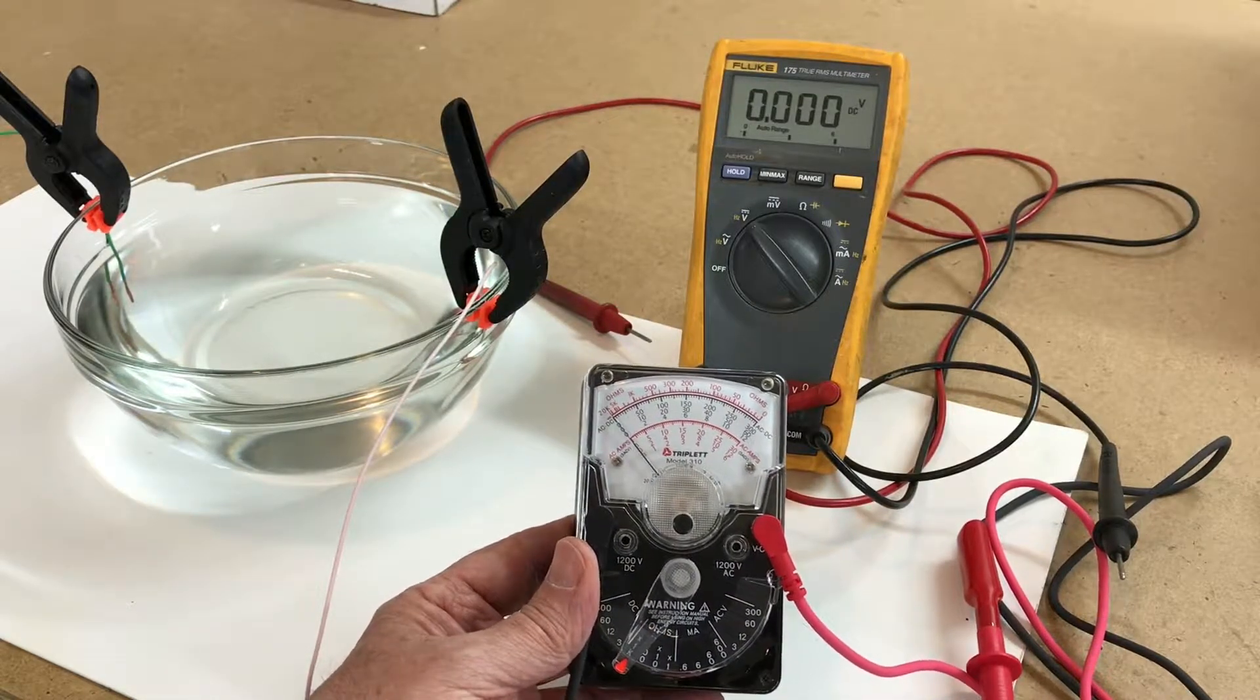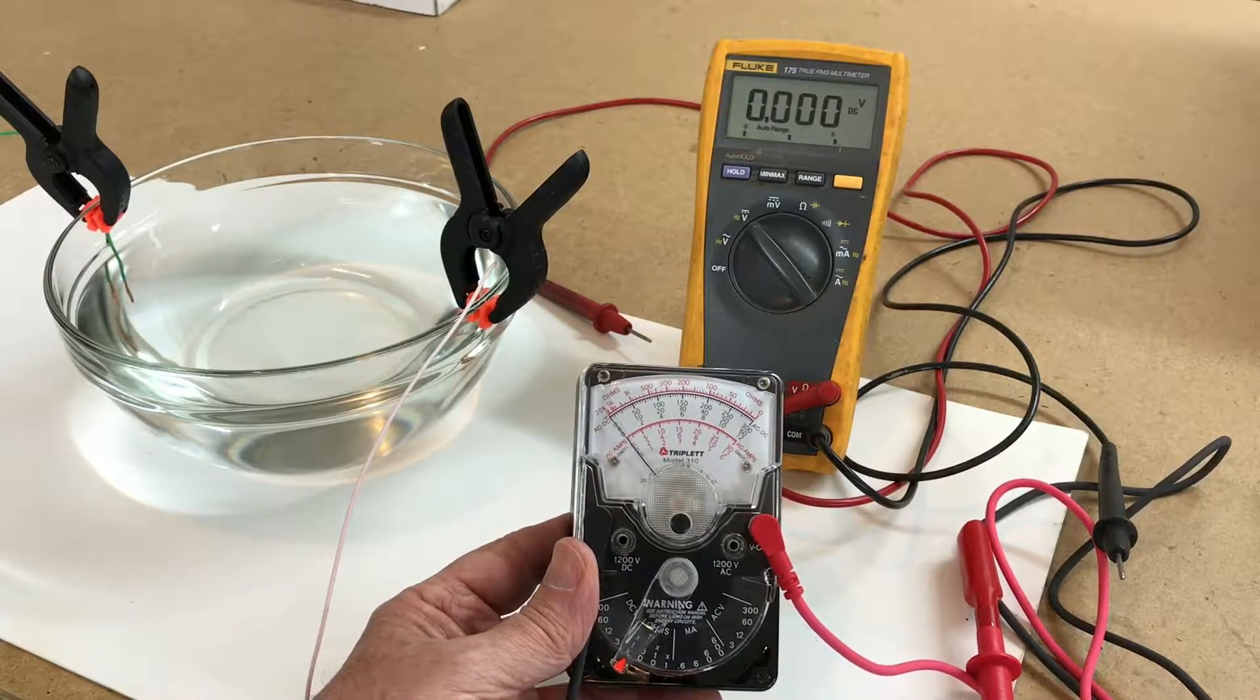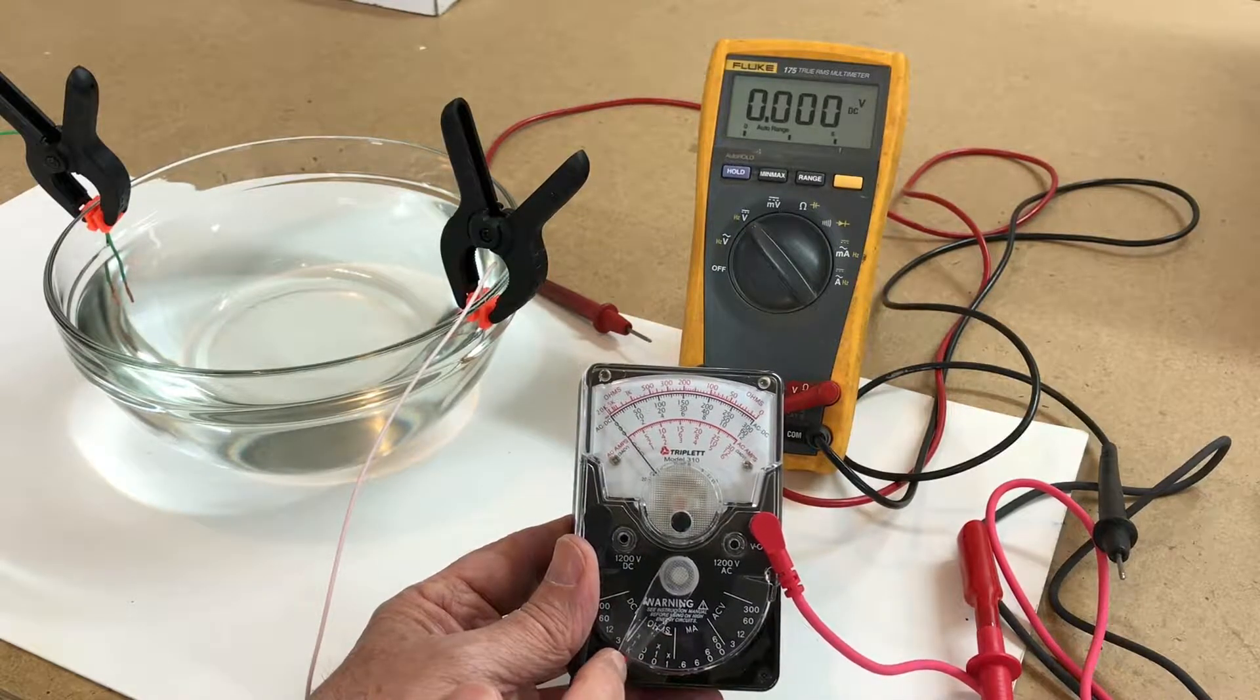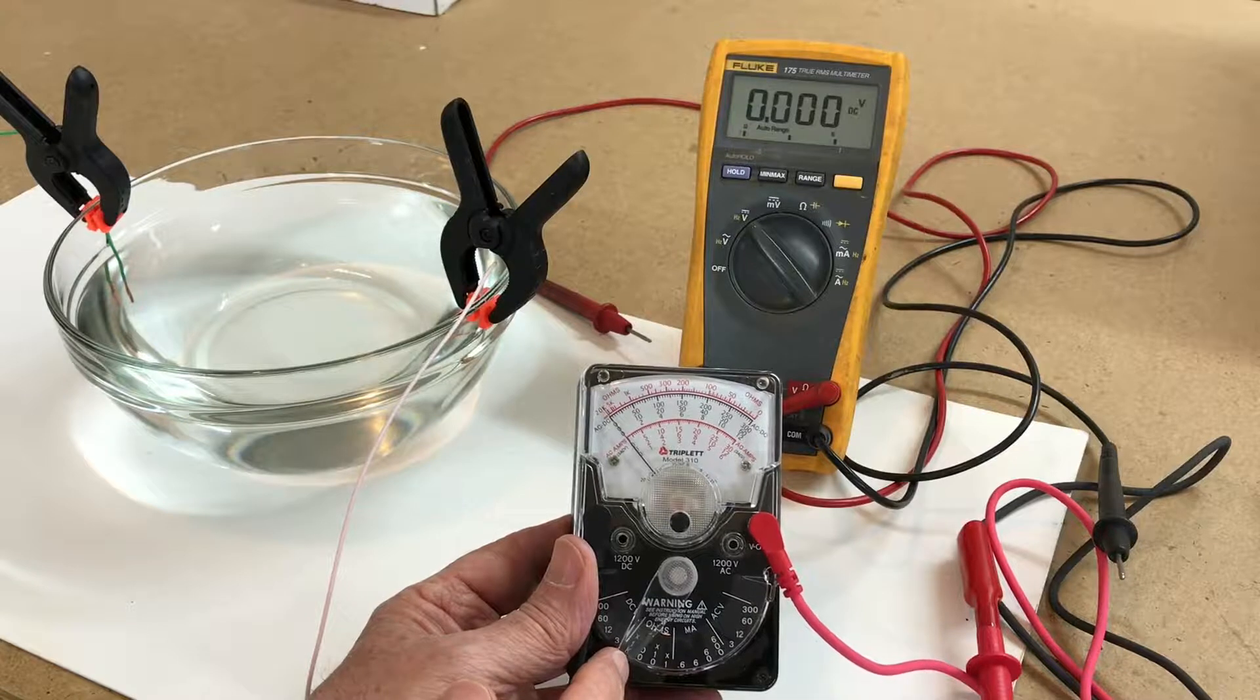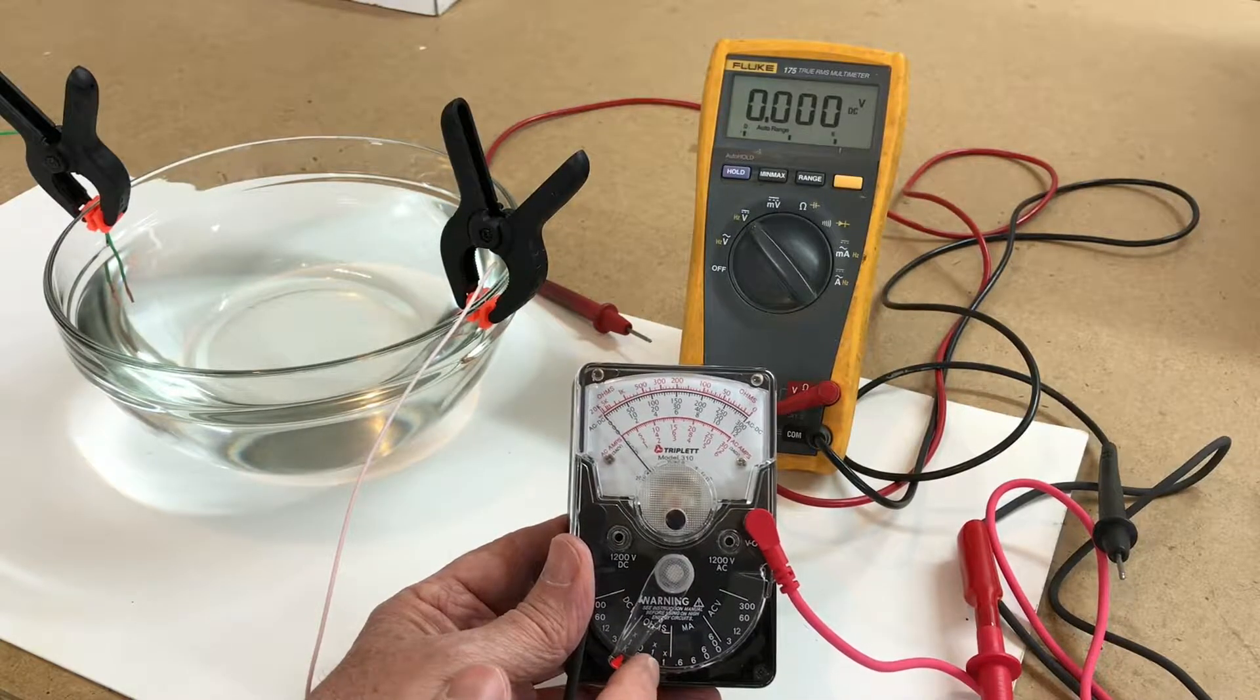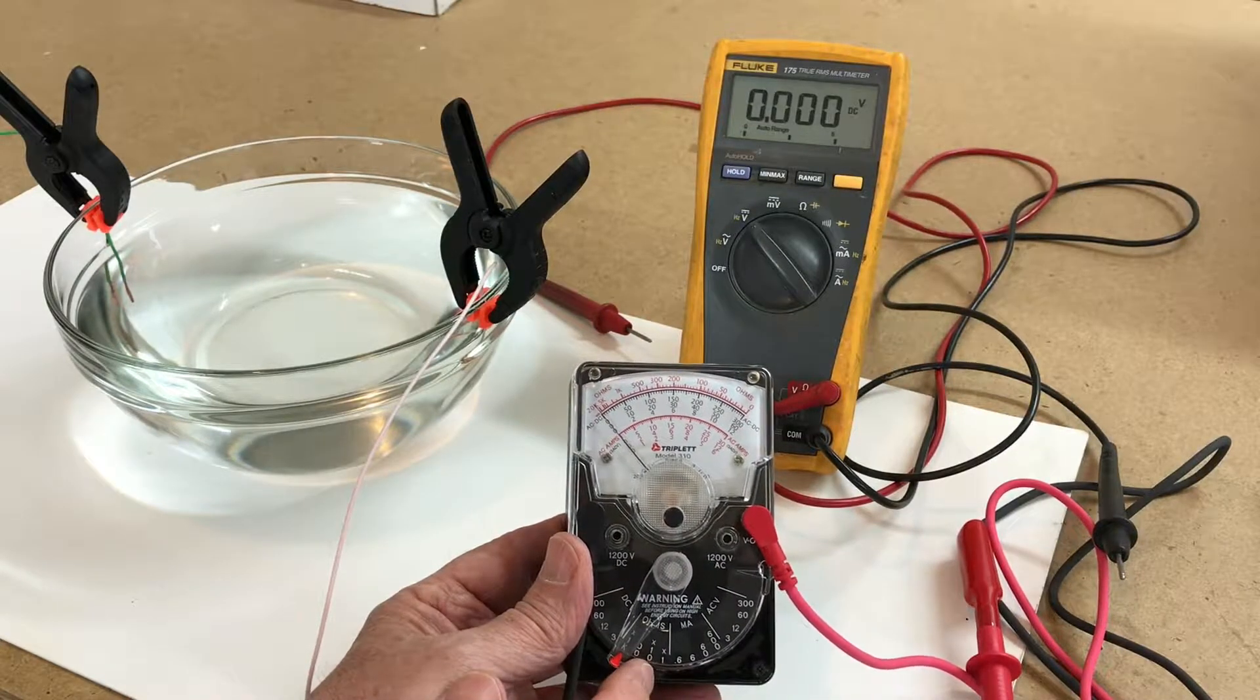So that's where the Triplet 310 comes in. The Triplet on the high range or the 1k setting, there's two batteries in here: a 1.5 volt DC and a 12 volt DC.